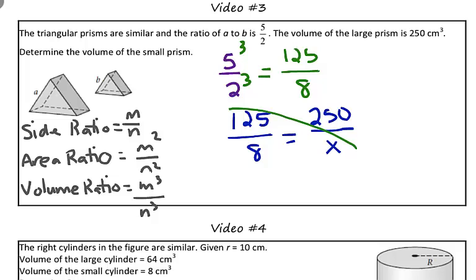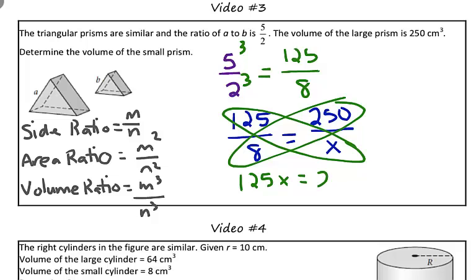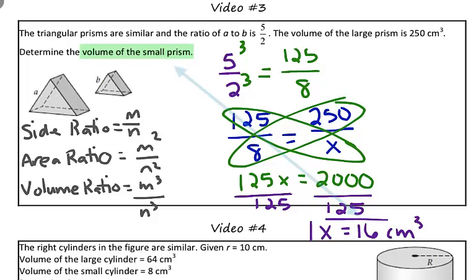So, to solve this, we're going to go ahead and cross-multiply. So, we will get 125x is equal to 2,000. And to get x by itself, we're going to use inverse operations. So, we're going to divide both sides by 125. And we are going to be left with x is equal to 16 centimeters cubed, which is the volume of the smaller prism. Nice work!